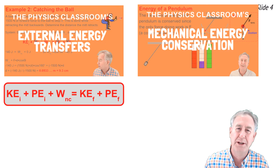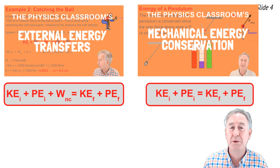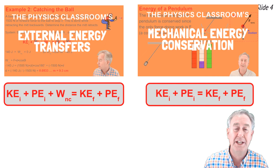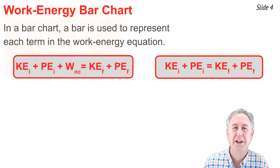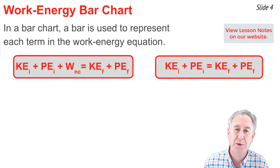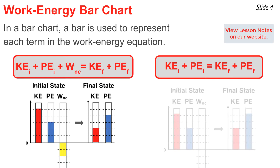In the video on Mechanical Energy Conservation, we discussed situations in which there was no work done by non-conservative forces, and the initial amount of mechanical energy — kinetic plus potential — is equal to the final amount of mechanical energy. In a work-energy bar chart, we use a vertical bar to represent each term in these two equations. For the case in which work is done, there'll be a work bar; for the case with no work done, there won't be a work bar.